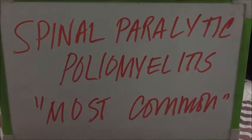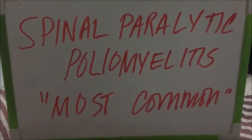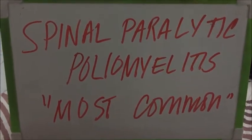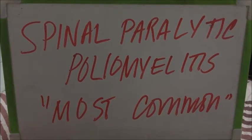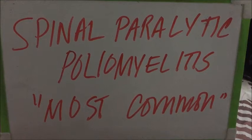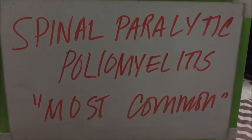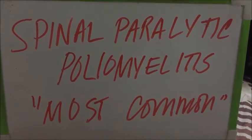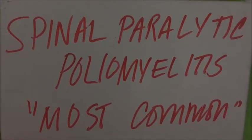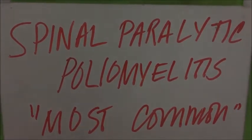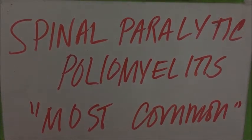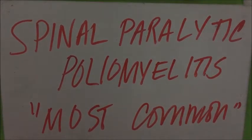Spinal paralytic poliomyelitis is the most common type of poliomyelitis, including 80% of cases. This results from lower motor neuron lesion of the anterior horn cells of the spinal cord. Most of the muscles affected are the legs, arms, or the trunk. Severe cases could be quadriplegia, paralysis of the trunk, and abdominal and thoracic muscles.